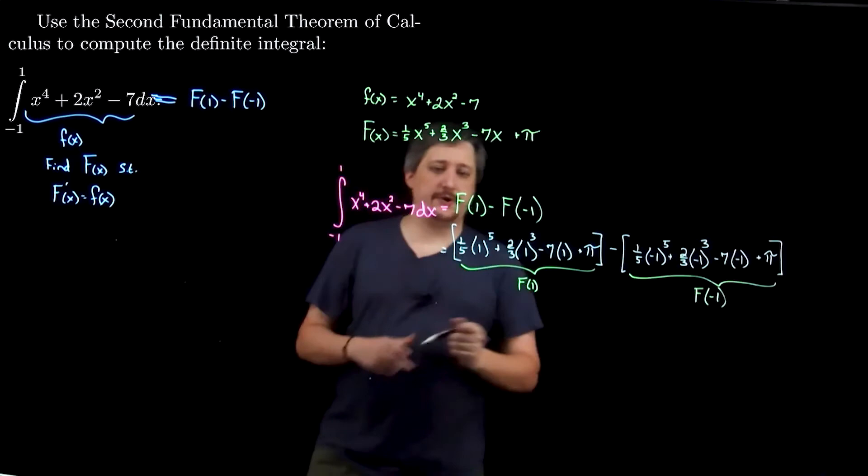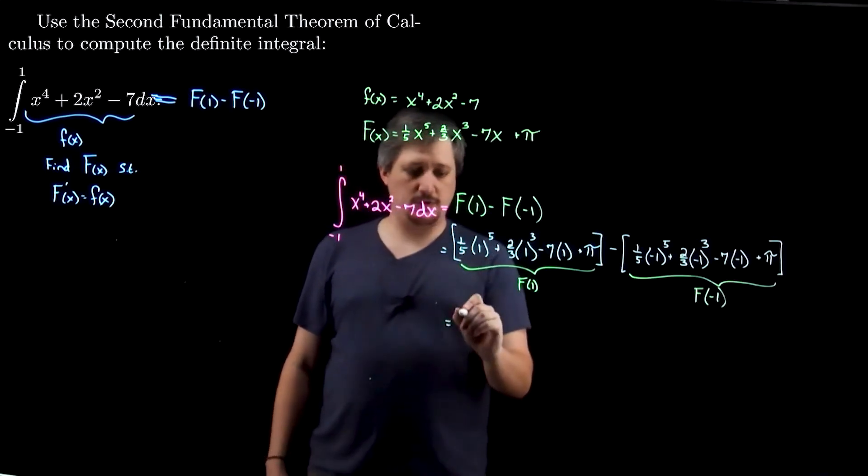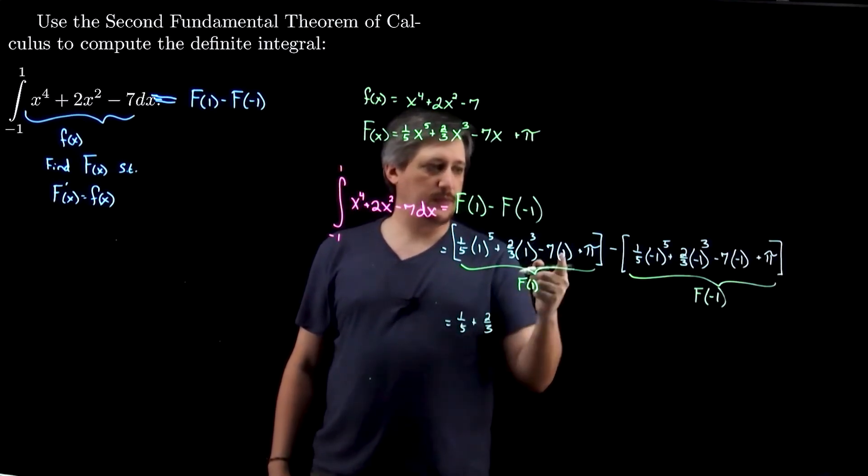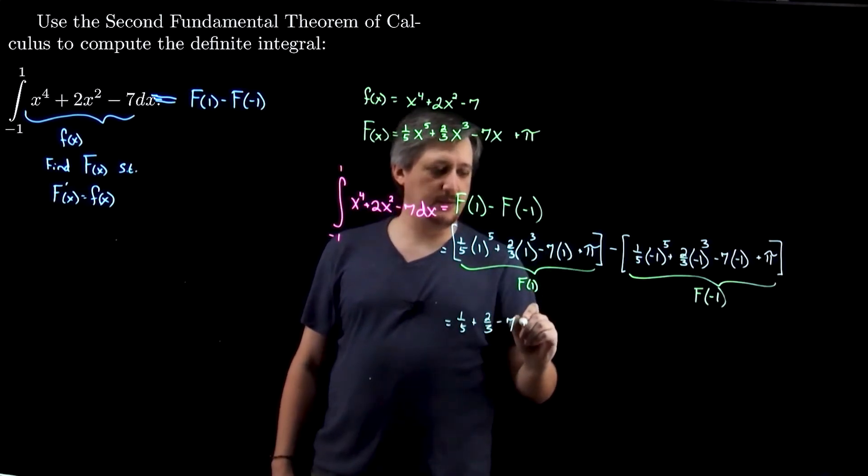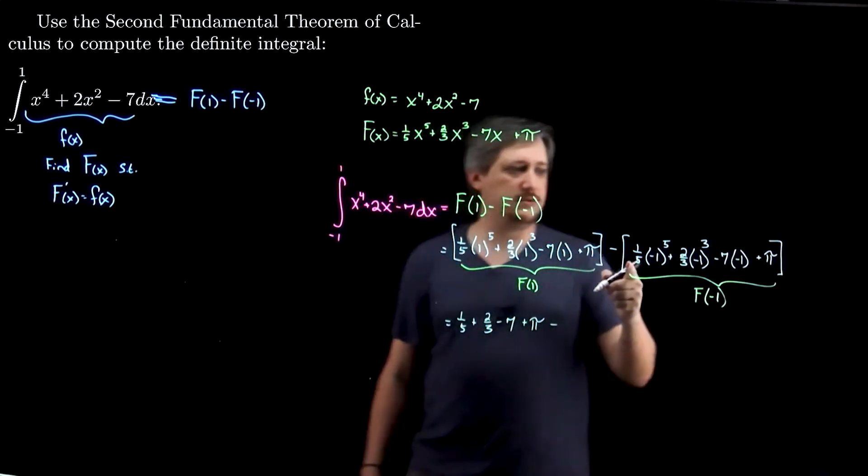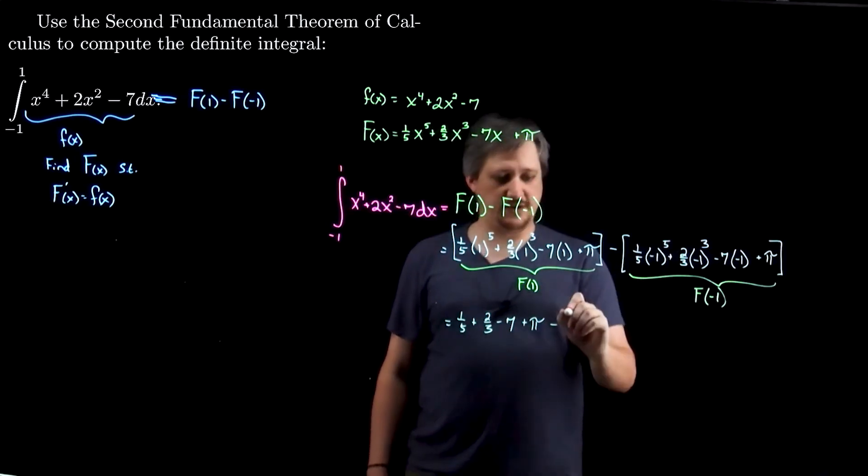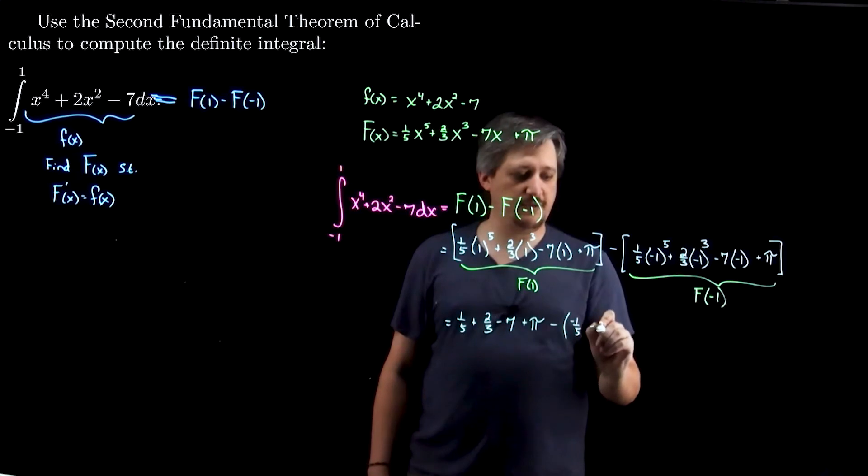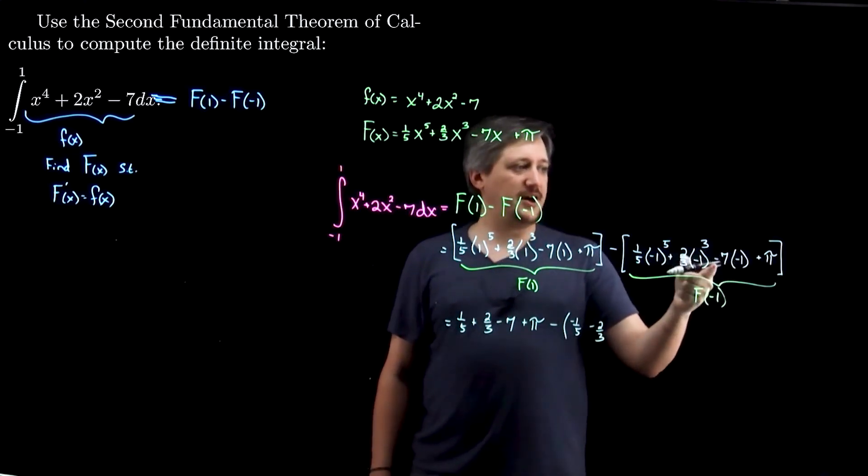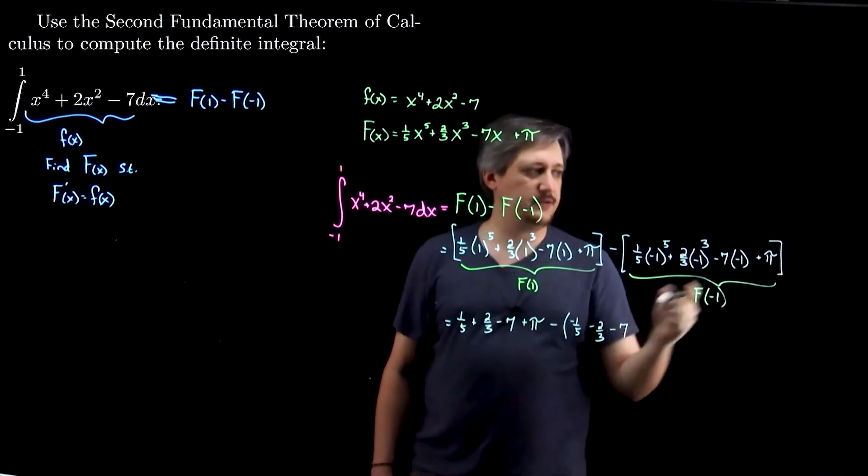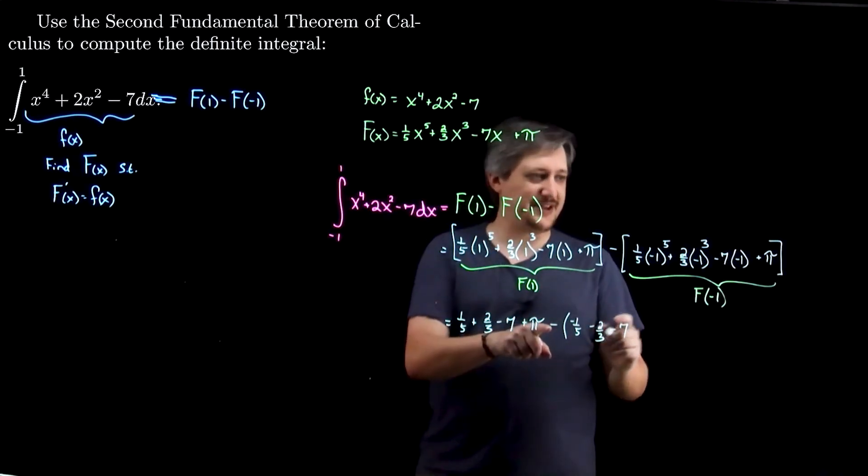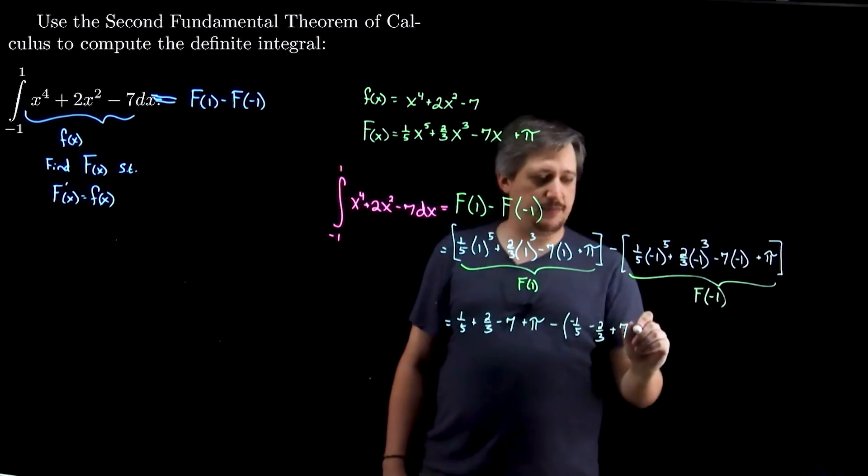And now, I'm going to simplify, right? So, here, I'm going to get 1 fifth plus 2 thirds minus 7 plus pi. So, minus 1 fifth. So, let me do it this way. Negative 1 to the fifth is negative 1, so that's going to be negative 1 fifth. That's going to be negative 1, so that's going to be negative 2 thirds. That's going to be positive 7 minus, so that's going to be minus 7. And then, oh wait, I skipped ahead. Sorry. I'm not doing this negative yet. So this is going to be negative negative, so that's going to be plus 7. And then, plus pi.